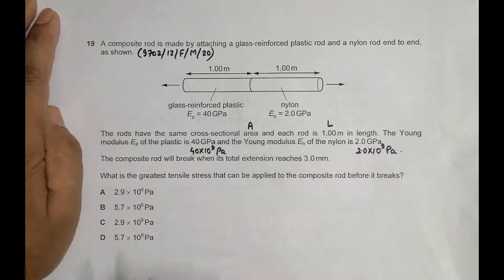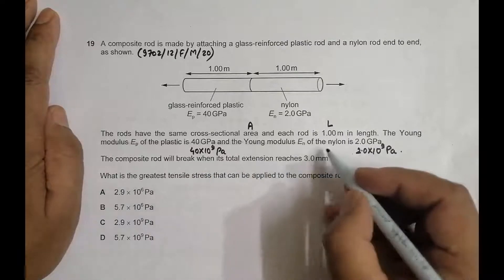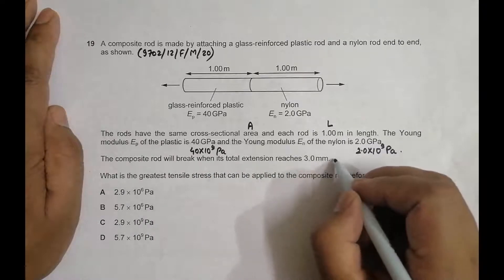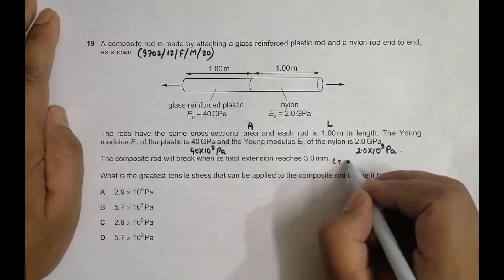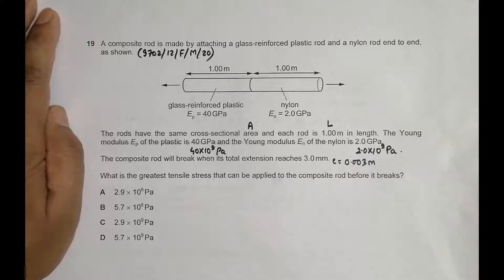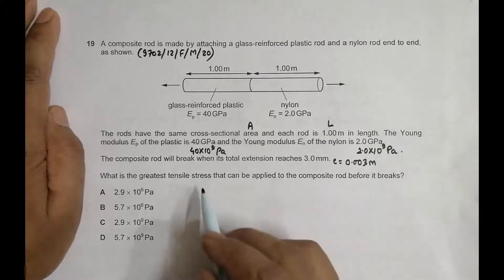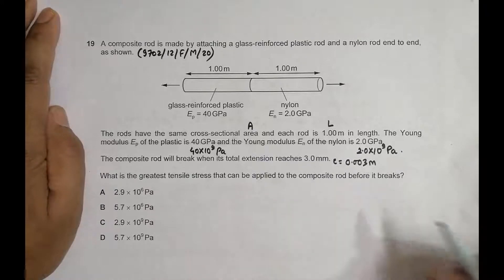The composite rod will break when its total extension reaches 3.0 mm, which equals 0.003 m. What is the greatest tensile stress that can be applied to the composite rod before it breaks?